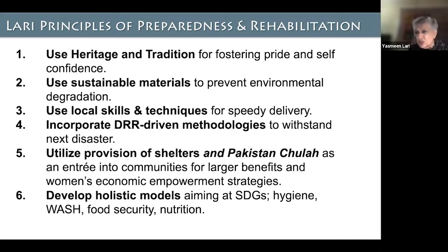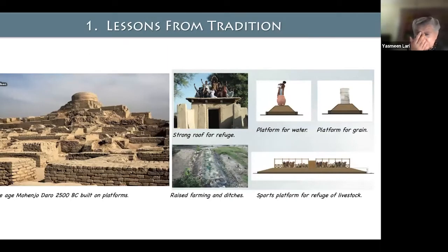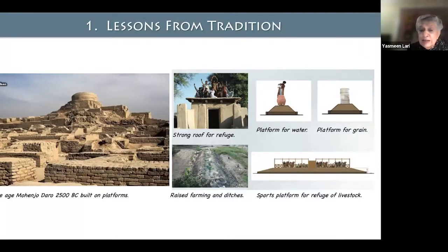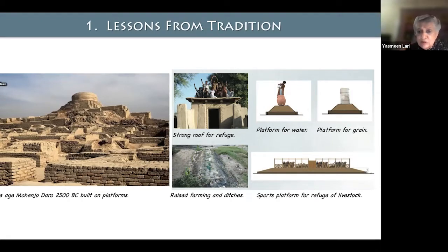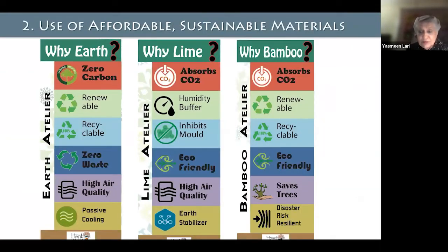Sixth, develop holistic models aiming at SDGs — hygiene, WASH, food, technology, nutrition — we need to address all of that. On the left is Mohenjo-daro, a 5,000-year-old Bronze Age city built on platforms, which is how it was protected from floods. I've always devised buildings and platforms so that people can take refuge at upper levels — roofs or platforms for cattle and human beings — at very low cost.